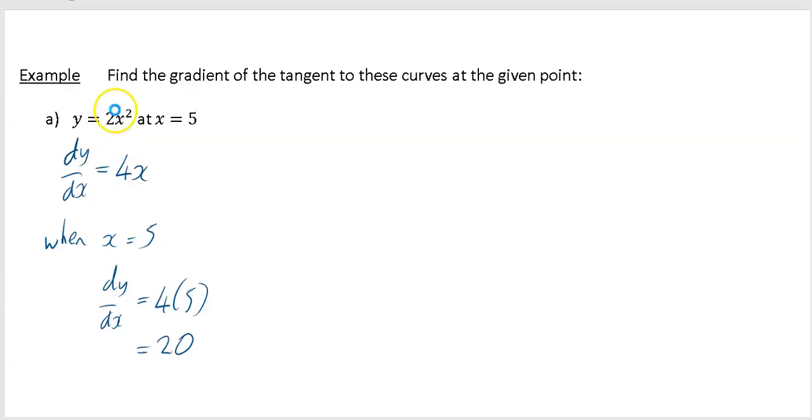So dy by dx is equal to 20. So what we find here, folks, for this curve, when your x is equal to 5, the gradient is equal to 20.